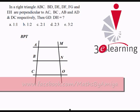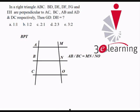then the ratio of AB by BC is equal to MN by NO. This is the BPT and one of the easiest concepts of geometry. Okay, so according to BPT, AB by BC equals MN by NO.